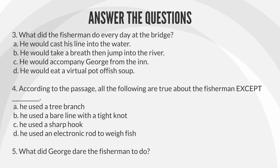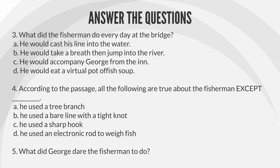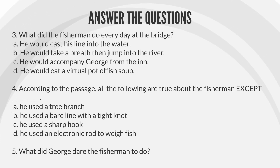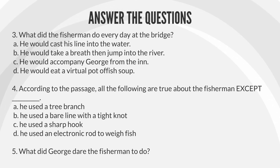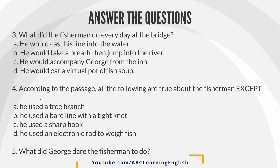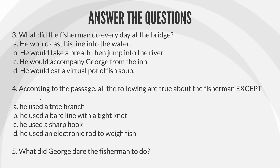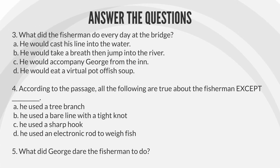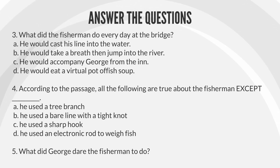Question 4: According to the passage, all the following are true about the fisherman except: A. He used a tree branch. B. He used a bare line with a tight knot. C. He used a sharp hook. D. He used an electronic rod to weigh fish.